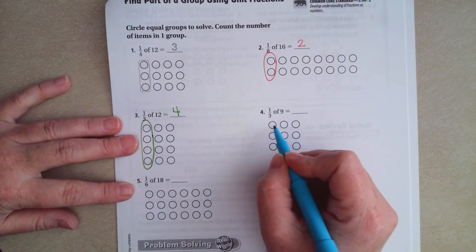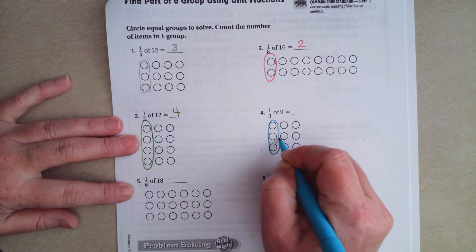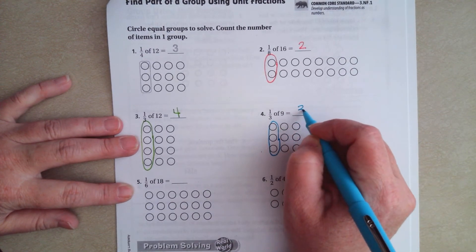1/3 of 9. 1, 2, 3 columns. So I'm going to circle 1 of those columns. There's 1, 2, 3 in that column.